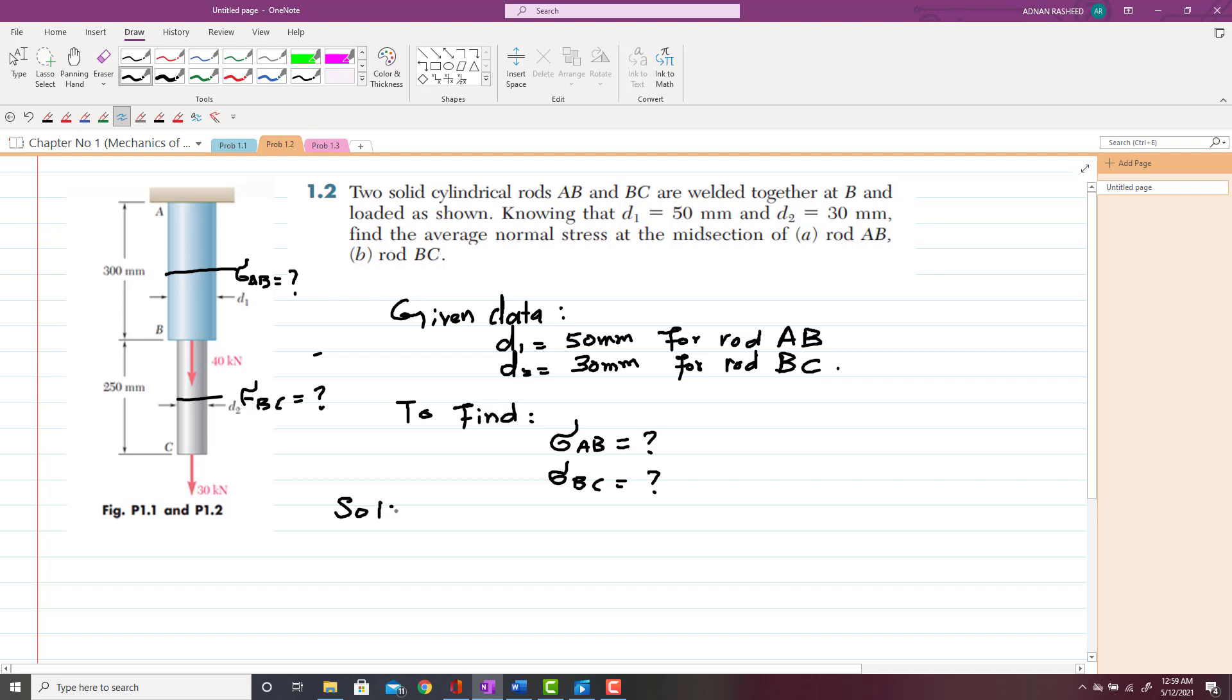So let's start with the solution of this problem. First, we will solve for rod AB. As you can see, rod AB is subjected to the total load of 40 kN and 30 kN. So total load acting on this rod AB is the sum of these forces: 40 kN plus 30 kN. So total load P will be equal to 70 kN of load acting on rod AB.